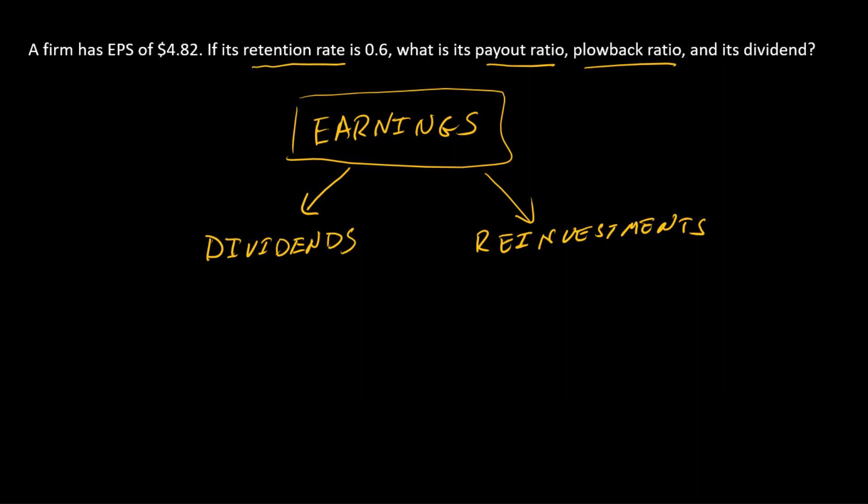Here's where the vocabulary comes in. On the reinvestment side, the fraction of earnings that are reinvested we might call the retention rate, or RR. Another name for the retention rate is the plowback ratio. I'm going to call that PB. So those are synonyms.